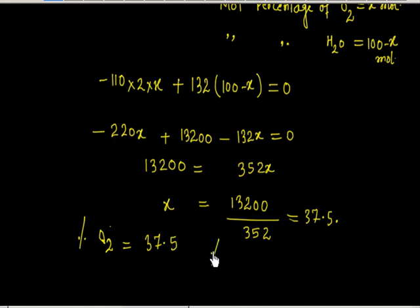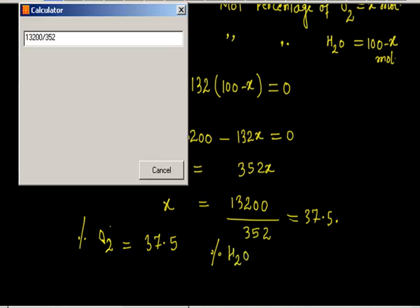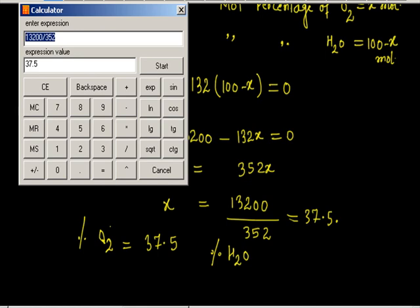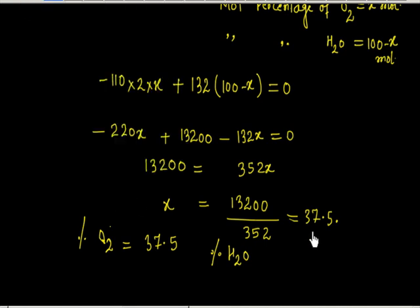So the mole percentage of H2O is 100 minus 37.5%, which equals 62.5%.